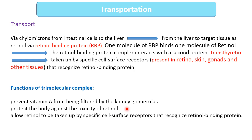The tri-molecular complex: (1) protects the body against toxicity of retinol by preventing excess free retinol in the bloodstream; (2) prevents vitamin A from being filtered by the kidney glomerulus, so vitamin A is not lost through urine — being a large complex, it cannot easily be filtered; (3) allows retinol to be taken up by specific cell surface receptors that recognize RBP. These receptors are present in various tissues, most notably the retina, skin, gonads and other tissues.